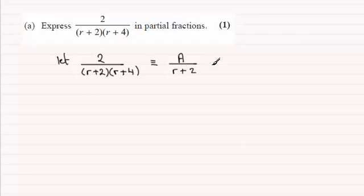plus another constant, let's call it b, over the other linear factor r+4. And what we do now is we multiply both sides by the denominator here, (r+2)(r+4), and therefore we'll end up with